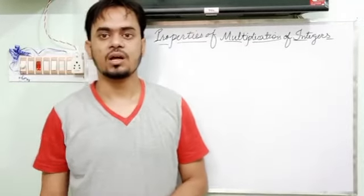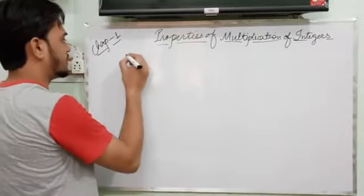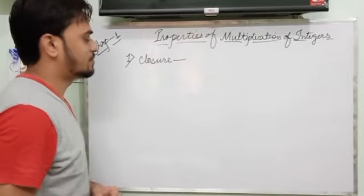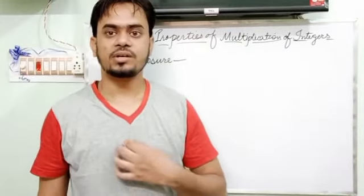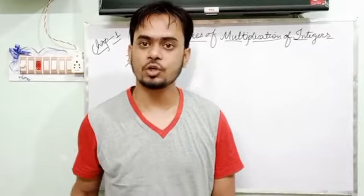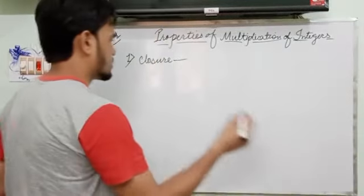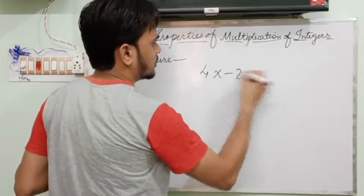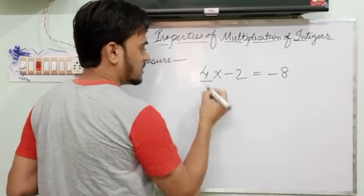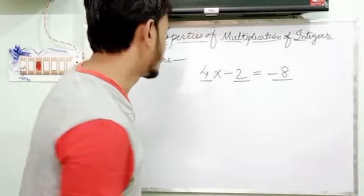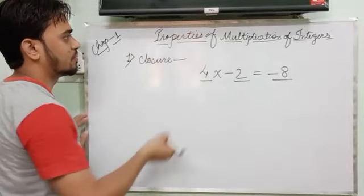There are six properties of multiplication of integers. The first property is the closure property. What is the closure property? If you have two integers and you multiply them, the result should also be an integer. For example, four and minus two: the result is minus eight. Four is an integer, minus two is an integer, and minus eight is also an integer. So this demonstrates the closure property for multiplication.